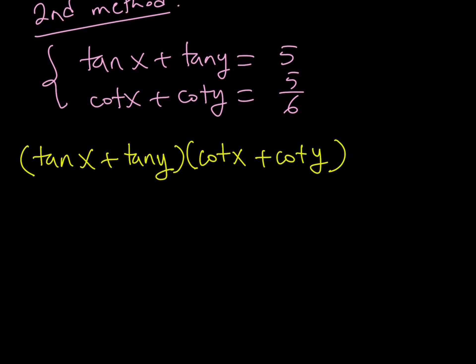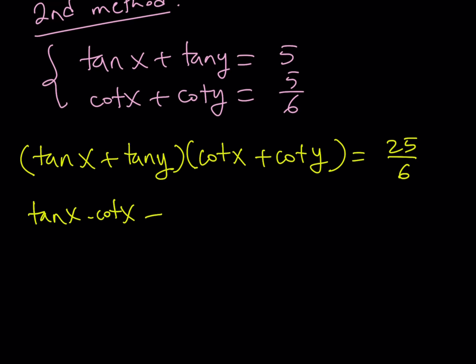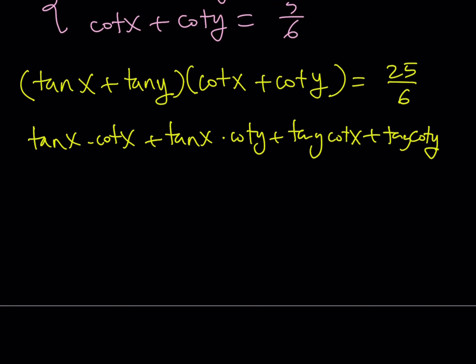First of all, why not? I can do it. And second, when I do, I'm going to get something nice, which is tangent x times cotangent x equals 1. So let's go ahead and distribute it. Tangent x times cotangent x plus tangent x times cotangent y plus tangent y cotangent x plus tangent y cotangent y, and it's equal to 25 over 6. This becomes 1 because they're reciprocals and this becomes 1. So we get 1 plus 1, which is 2.